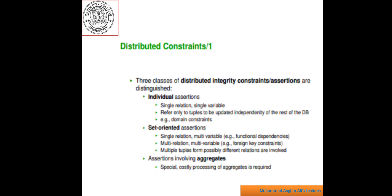Now, the next topic is distribution definition of distributed integrity assertions. Three classes of distributed integrity constant assertions are distinguished. Number one, individual assertion means single relation single variable assertion. They refer only to tuple to be updated independently of the rest of the database. For example, domain constraint.